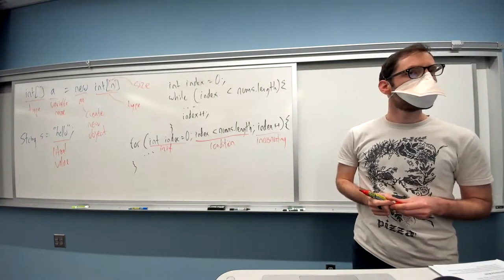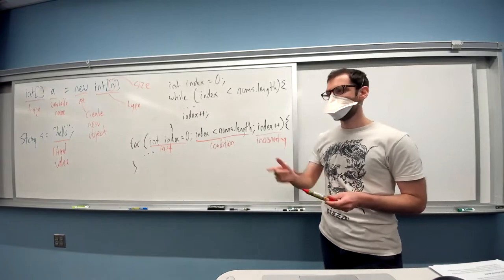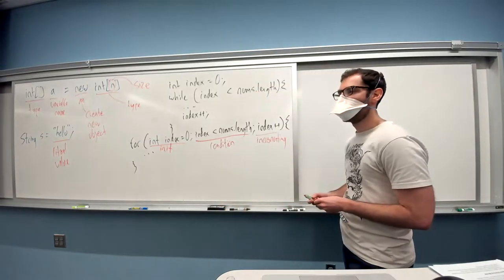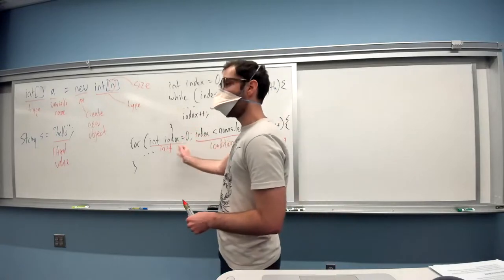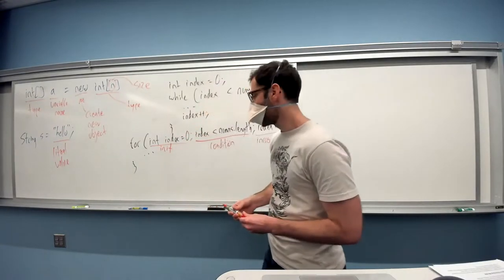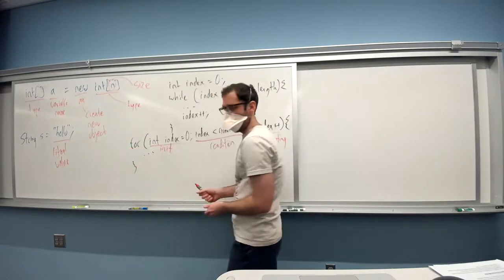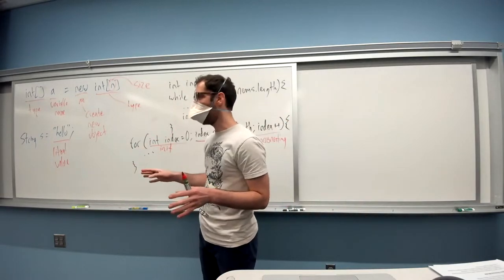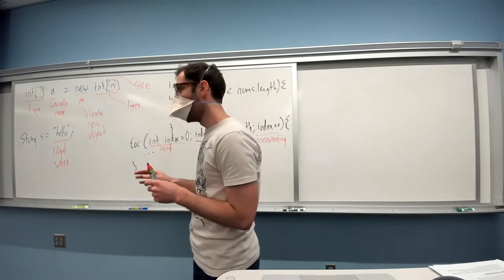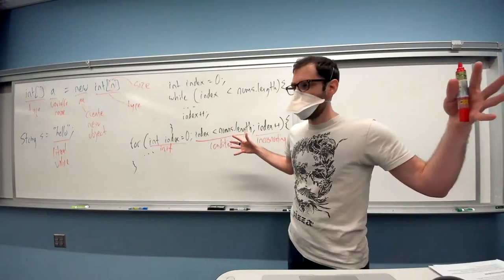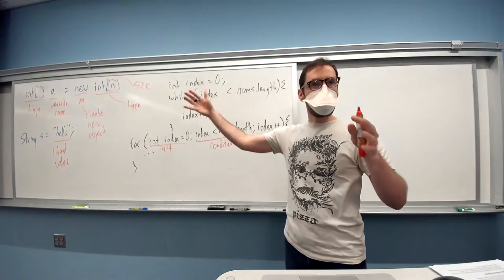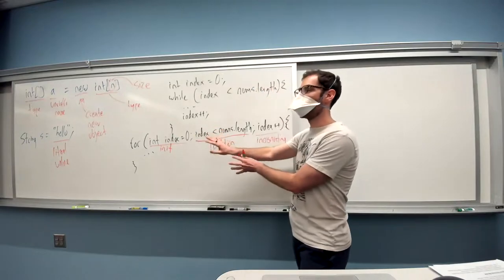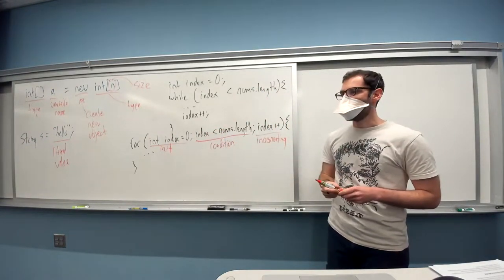Could you put the for loop parts all on separate lines? Yes. Unlike Python, Java doesn't care about new lines and tabs — they mean nothing to Java. You could take your Java program and slap it all on one line with semicolons separating each statement, and Java would be totally fine with that. Similarly, you could put the for loop parts on separate lines and it would be equivalent. Java completely ignores new lines and tabs in that way.